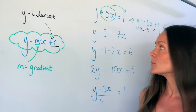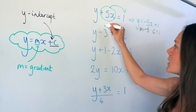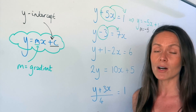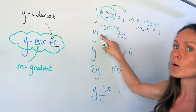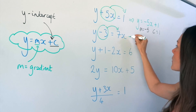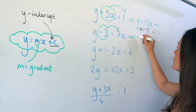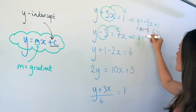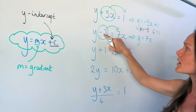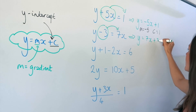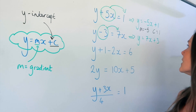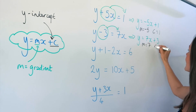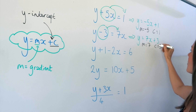Likewise, in the second one we need to rearrange the equation — I need to move that negative 3 to the other side. When it moves, it changes to a positive 3. So the equation becomes y equals 7x, which hasn't moved so it's still positive, plus 3. Now we can see m and c: m, the number in front of the x, is positive 7, and c is positive 3.